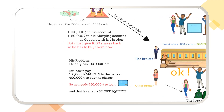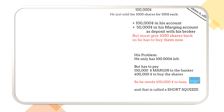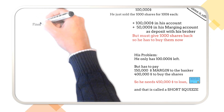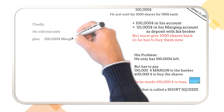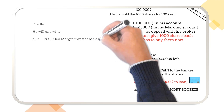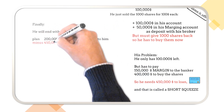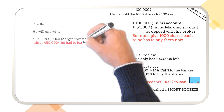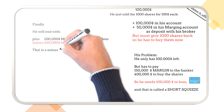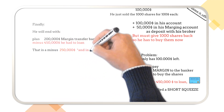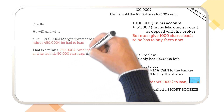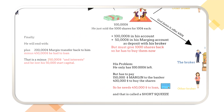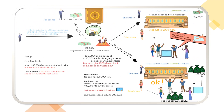The hedge fund on the other side gets back his two hundred thousand dollars that were in his margin account, but has to pay back the four hundred fifty thousand dollars he had to loan. That makes a loss of two hundred fifty thousand dollars, plus interest for the initial borrowing of the stocks. He also lost fifty thousand dollars of his starting capital.